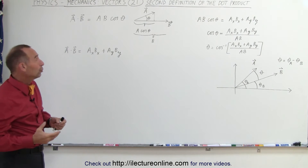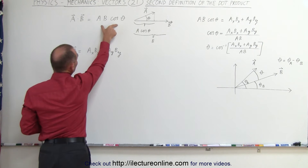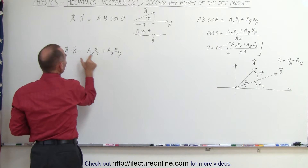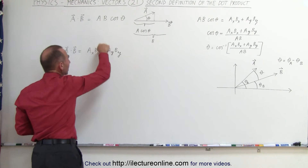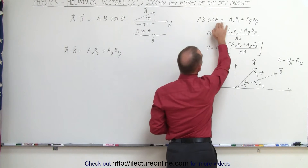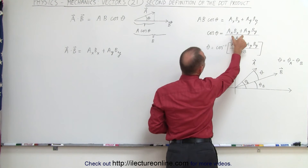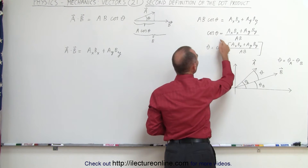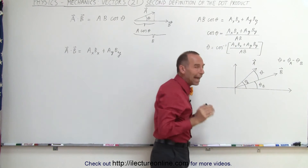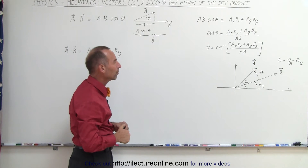Since that's true, we can say that if this is definition one of the dot product and this is definition two, we can set those equal to one another. We can then solve for the cosine of theta by dividing both sides by A times B, and then we can take the arc cosine — the inverse cosine — which allows us to find the angle between any two vectors. That's typically the method that is used.